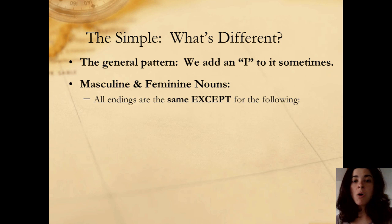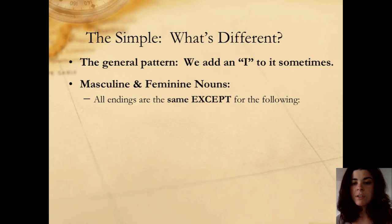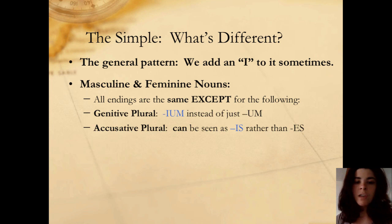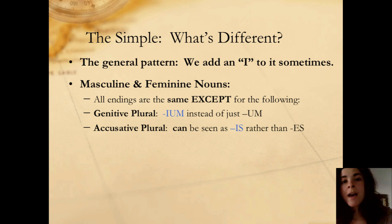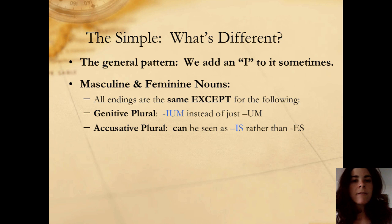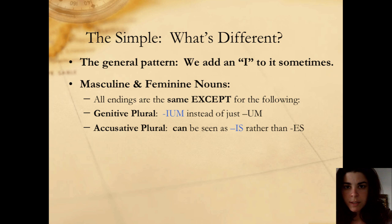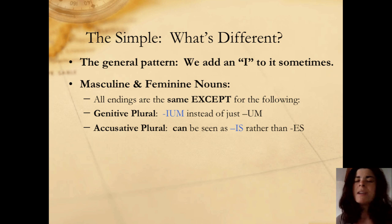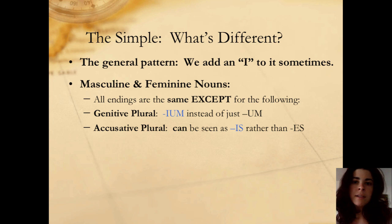With masculine and feminine nouns, all the endings are exactly the same that you already know for third declension, except for the following. Genitive plural is going to have I before the UM, so it's IUM now instead of just UM. Accusative plural is going to have a weird alternative ending — there's still the ES that you're always going to see, but sometimes you're going to see an IS occasionally, when you start reading texts that haven't been edited from their original form as much.